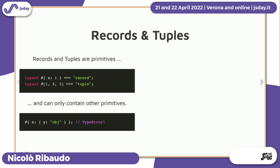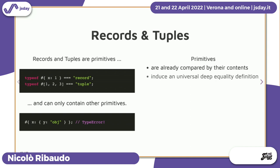Records and tuples are primitives and they can only contain other primitives. If you try to put a mutable object inside a record, it will throw. This is because primitives are already compared by their contents. For example, if you have two strings in different parts of the program and you compare them, you are checking that they have the same characters, not that they have the same pointer. It's easy to define what deep equality means with primitives because you just recursively check if the primitive values are the same.